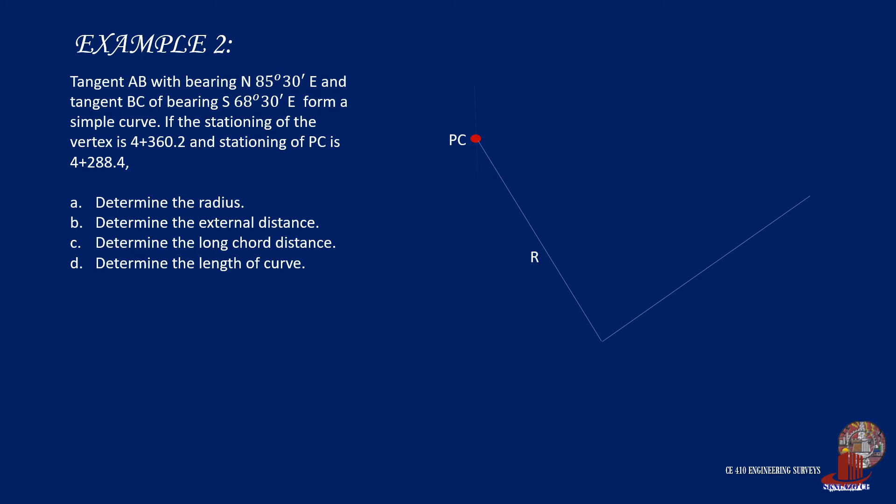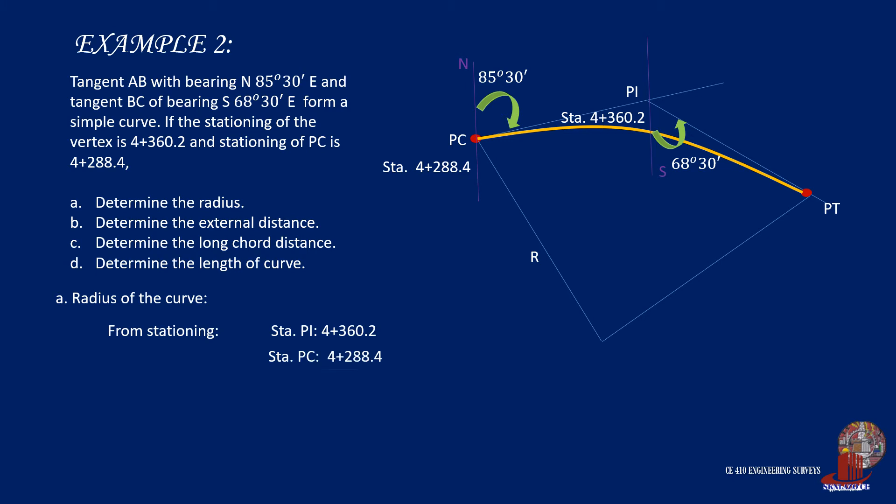With the given bearings of the tangents, we can see that at PC, the tangent is north 85 degrees 30 minutes east. The deflection angle is at PI, which has bearing south 68 degrees 30 minutes east. The stationing of PC and PI will be used to identify distances. The distance between PI and PC is the back tangent. By subtracting the station of PC from PI, we get 71.80 meters, which is the length of the tangent.